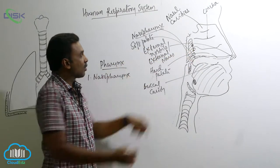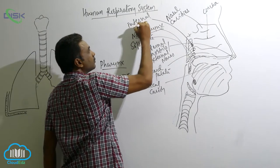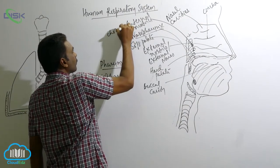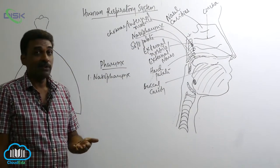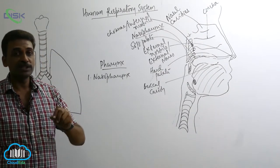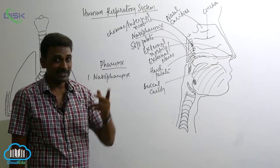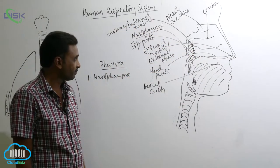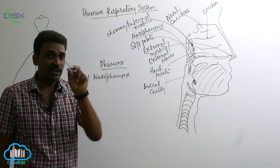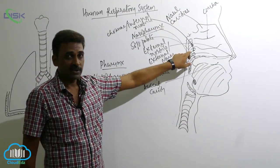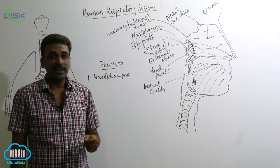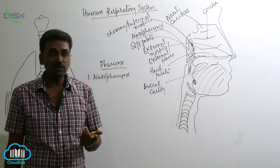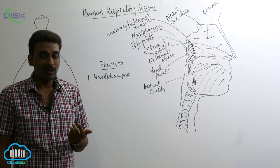In fishes, internal nostrils are generally absent, but a group of fishes where internal nostrils are present is called choanichthyes — 'choana' means internal nostril and 'ichthyes' means fish. Eustachian tubes also open into the nasopharynx — they are tube-like structures coming from the middle ear. Inside the nasopharynx we also find pharyngeal tonsils, also called adenoids.